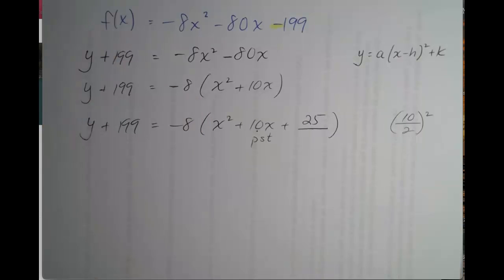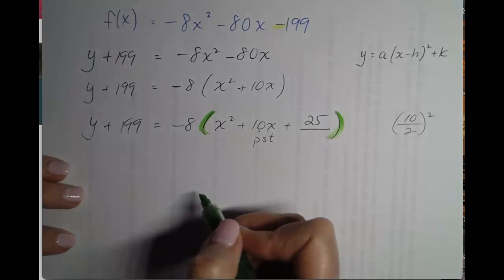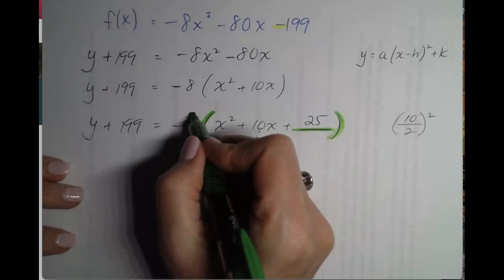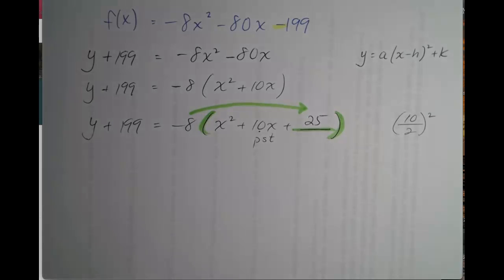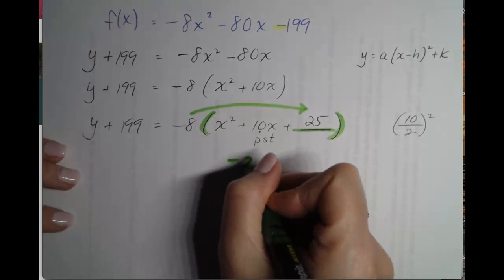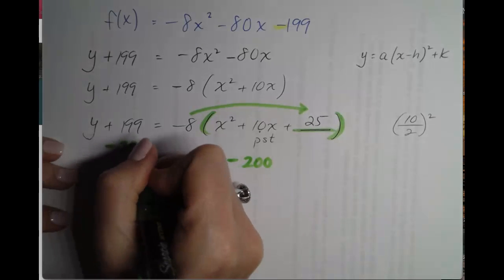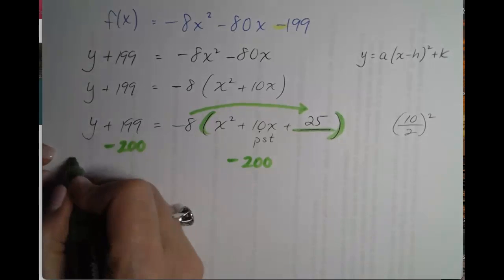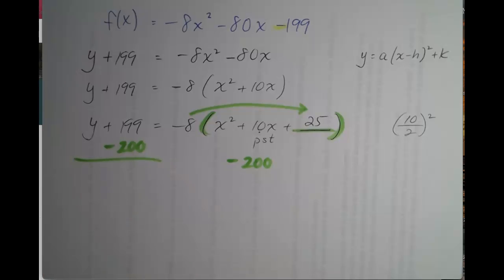But what have we actually added to the right hand side? Remember, this is inside the parentheses that 25 is under the influence of the negative 8. So what have we actually added on the right? We have actually added negative 8 times 25. That is negative 200. So that means negative 200 also has to be added or in this case subtracted from the left hand side.